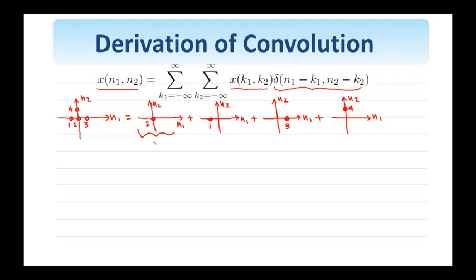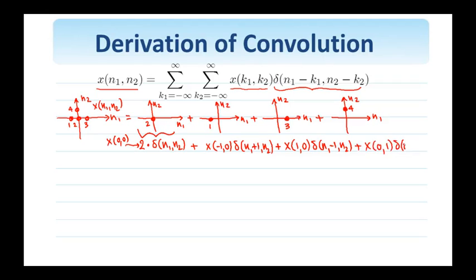Now, I can write this. This is a delta at the origin, so delta n1, n2. The height of the delta is 2, and this 2 is clearly the value of my signal x at 0, 0. Similarly, I have the value of the signal at minus 1, 0 equal to 1, delta n1 plus 1, n2, plus the value of the signal at location 1, 0, and that's the delta here, plus the last signal is the value of the signal at 0, 1, and the delta is at location n1, n2 minus 1. So I'll make use of this decomposition right away in deriving the convolution sum.